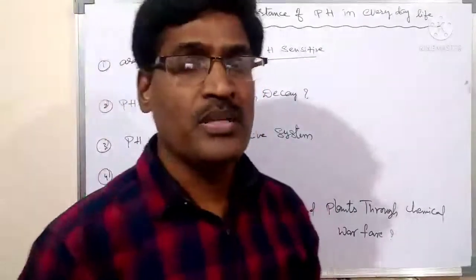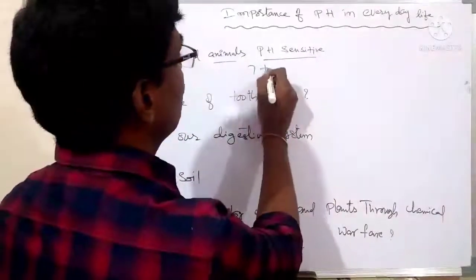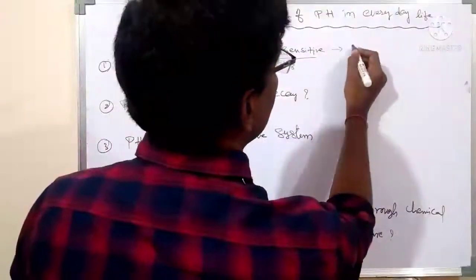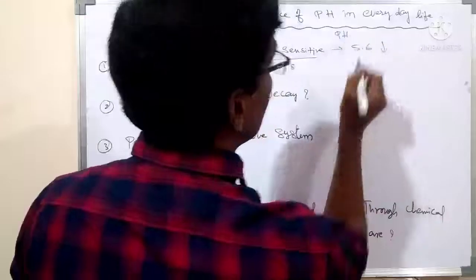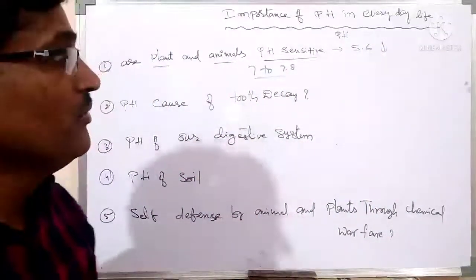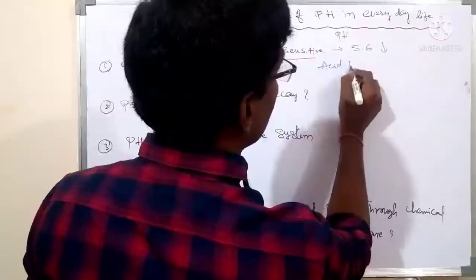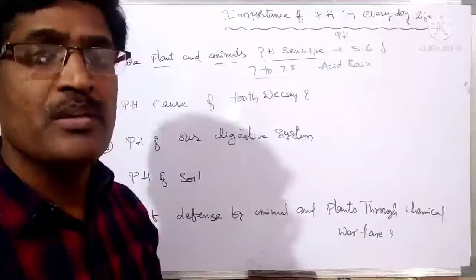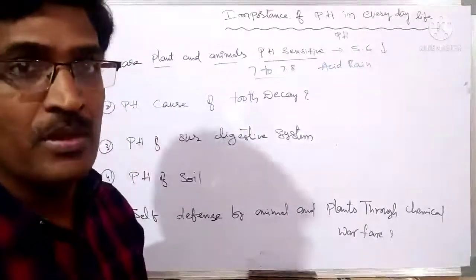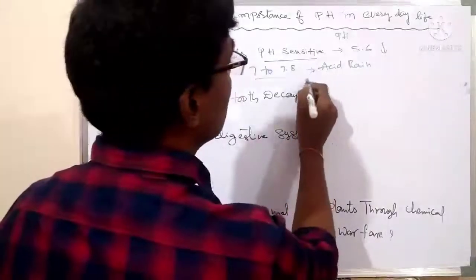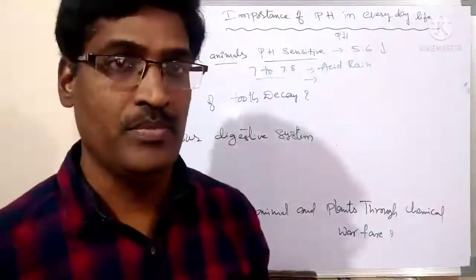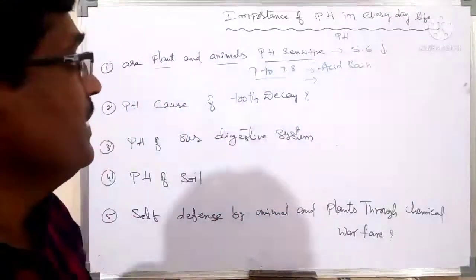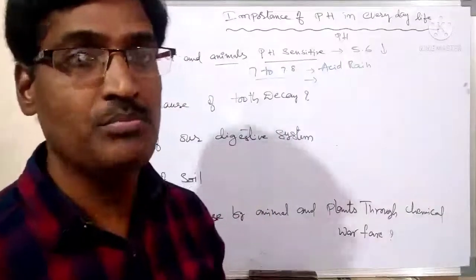Our body's pH value can be 7 to 7.8. Acid rain has a pH value of 5.6 or below. If acid rain falls on a pond, the water of the pond becomes acidified. When water becomes acidic, the aquatic animals' lives struggle because the oxygen level in the water decreases. That is why pH affects plants and animals living in the pond.